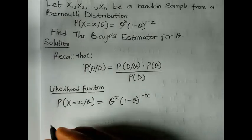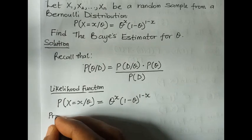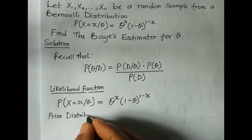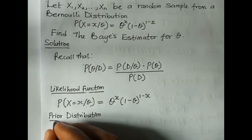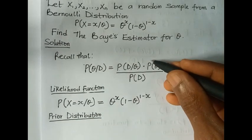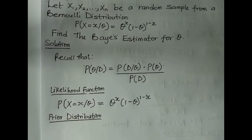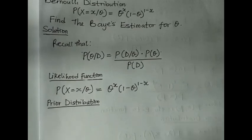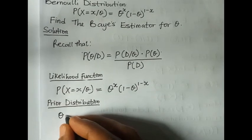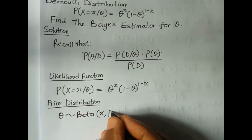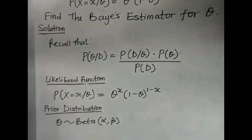The next thing we need is the prior distribution. As with the binomial case, we use the beta distribution as a prior for theta. So theta will follow a Beta distribution with parameters alpha and beta.